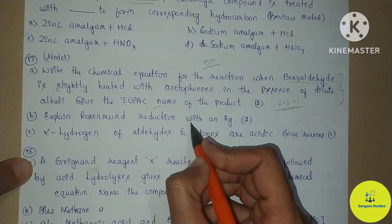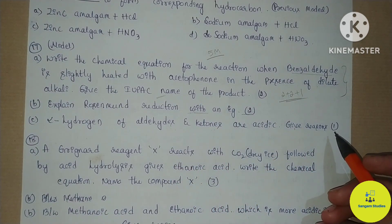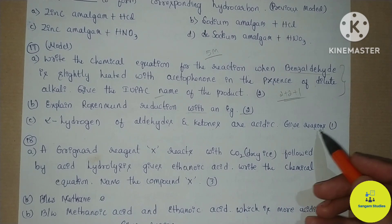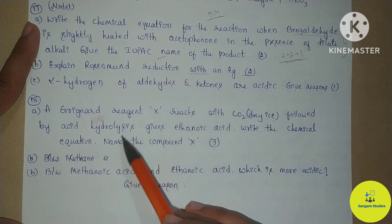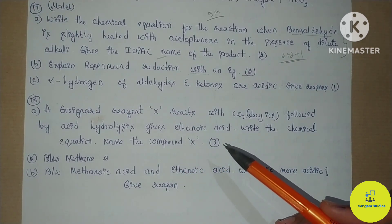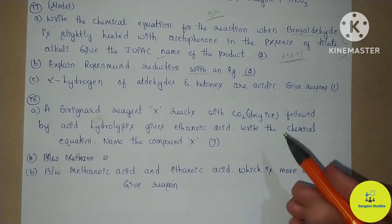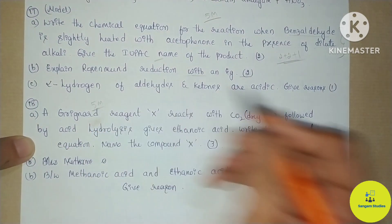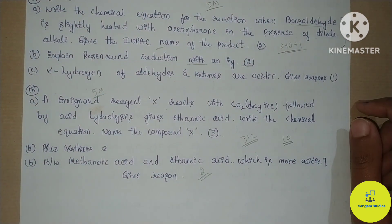The next question is Rosenmund Reduction with an example — 2 marks. After that, alpha-hydrogens of aldehydes and ketones are acidic — give reasons. This is a 1-mark give-reason and splitting-type question. From the model question paper: a Grignard reagent X reacts with dry ice, followed by acid hydrolysis, gives ethanoic acid — write the chemical equation and name compound X. This is under preparation of carboxylic acids by Grignard reagent, a 3+2 format 5-mark question. Next: methanoic acid and ethanoic acid — which is more acidic and give reasons — this is a 2-mark question from the lesson on aldehydes, ketones, and carboxylic acids.